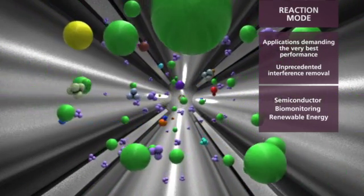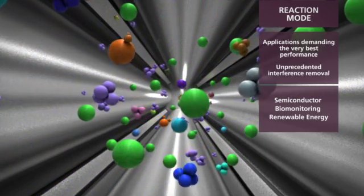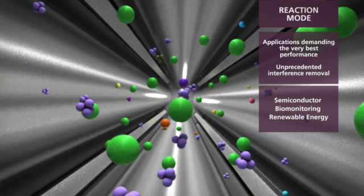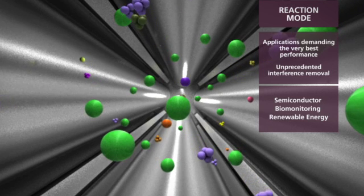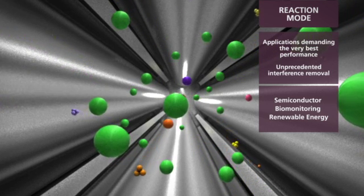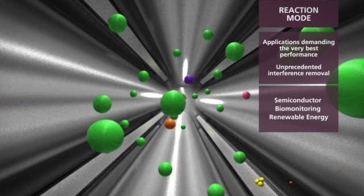Patented dynamic bandpass tuning also prevents the formation of new interferences. By using a scanning quadrupole inside the universal cell, all reactions can be anticipated, and only the element of interest is passed to the analyzing quadrupole. Any other byproducts of the reactions in the cell are instantly removed by the quadrupole.